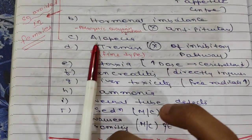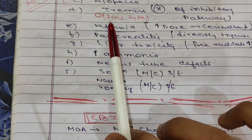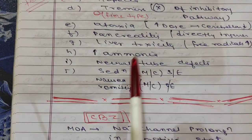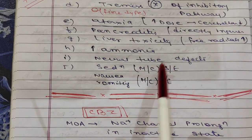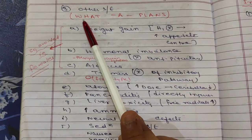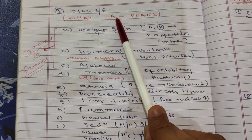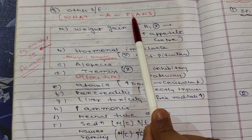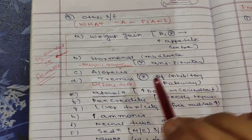Continuing the mnemonic: A for alopecia — these three effects (weight gain, hormonal imbalance, alopecia) mean the drug is avoided in females. T for tremors (fine type, due to inhibition of the inhibitory pathway), A for ataxia (cerebellar toxicity), P for pancreatitis, L for liver toxicity (with raised ammonia), N for neural tube defects (teratogenicity), and S for sedation as the most common side effect.